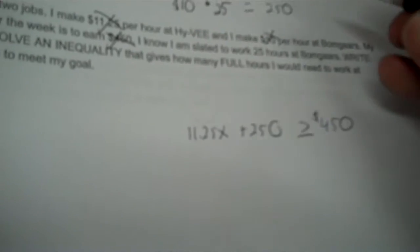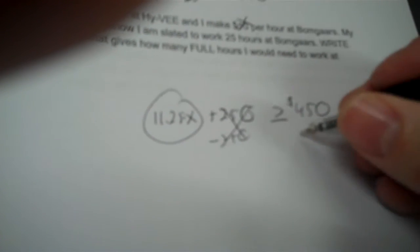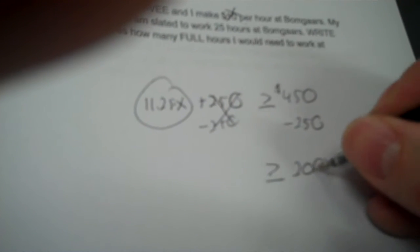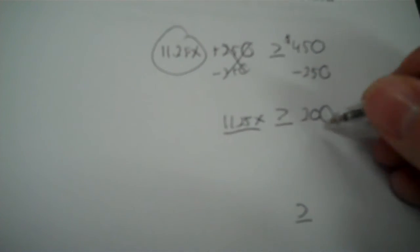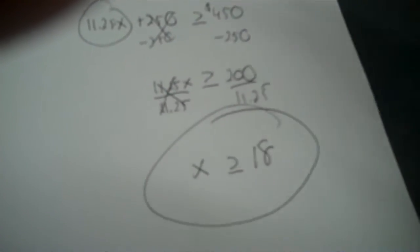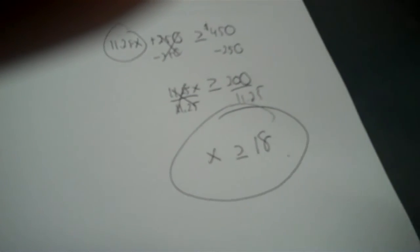So I write the expression 11.25X plus 250. X is multiplied by a positive, so I keep the sign the same. Then I subtract 250 from both sides — that's 200. Then I have 11.25X, and I divide by 11.25. So 200 divided by 11.25. The sign opens up towards the X, so I need to take the 17 up one full number, so it goes to 18. You'd have to work 18 full hours, or anything more than 18, to meet your goal.